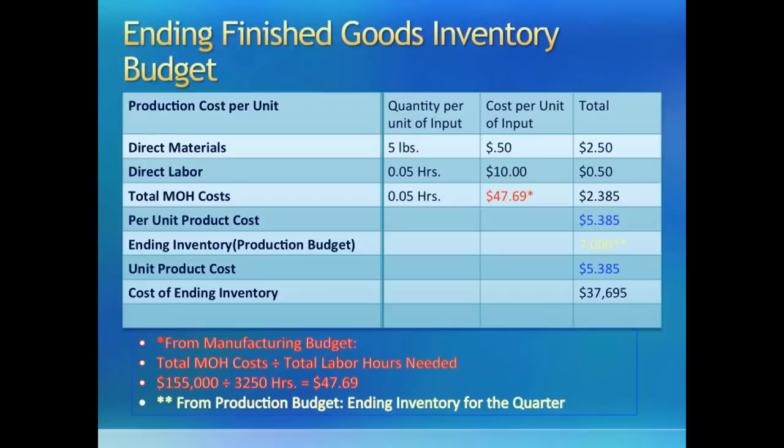Next, we go to the direct labor budget and take out per unit labor cost of production. It takes us 3 minutes, or 0.05 hour, or 1/20th of an hour to make one unit, and we need $10 to pay for each hour, meaning that our per unit labor cost will be $0.50.